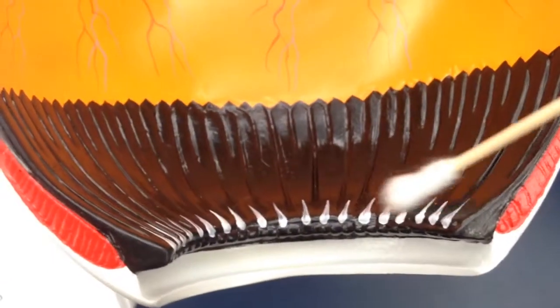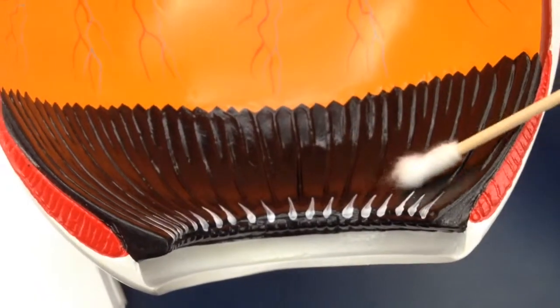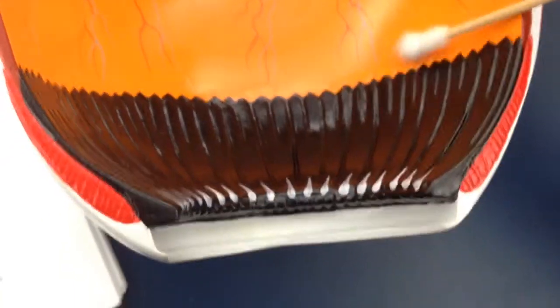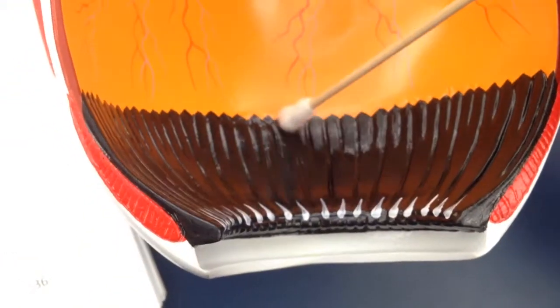These white lines are the suspensory ligaments. Little ridges are the ora serrata. This is the ciliary body.